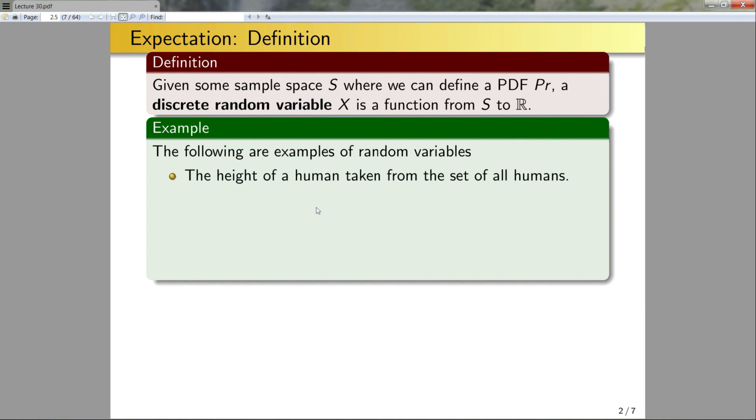The following are examples of discrete random variables. The height of a human taken from the set of all humans. So the set of all humans is some finite sample space S. We could define probability density functions over the set of all humans. That occurs all the time for, say, health insurance in the U.S. And height is a property that all humans have, a real number given some fixed units. So again, this works for many other human properties. You could say weight, age, any quantity of a human that can be described as a real number is an example of a random variable.